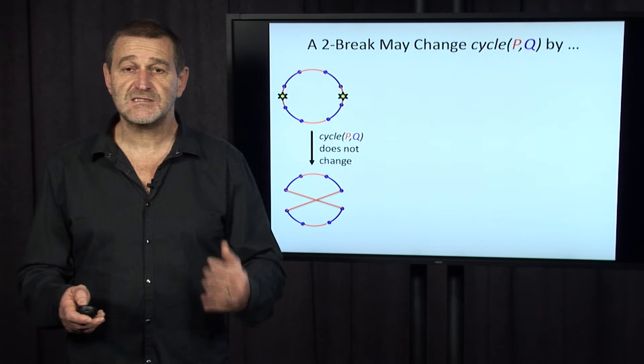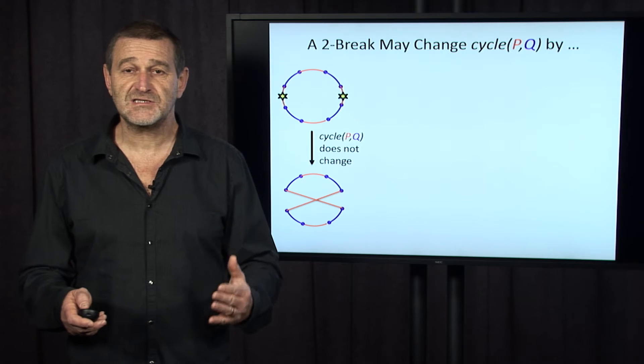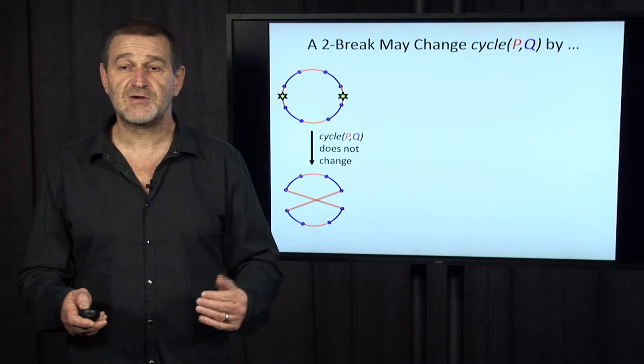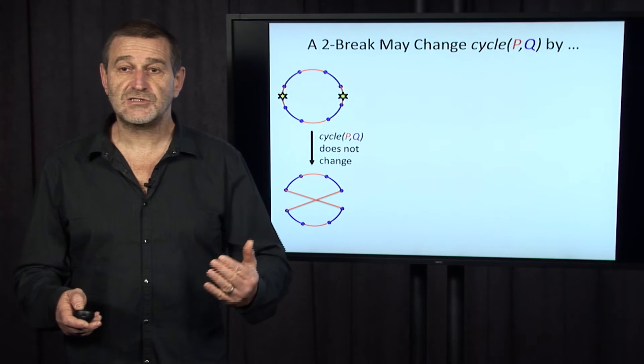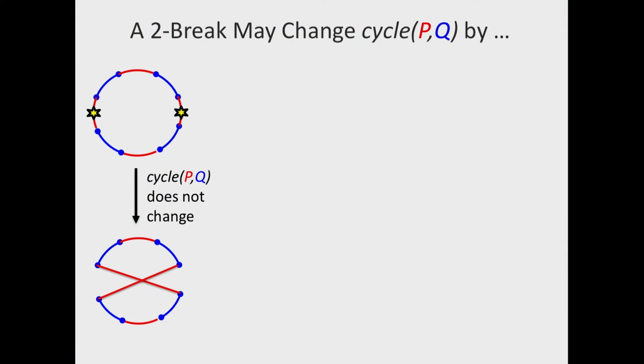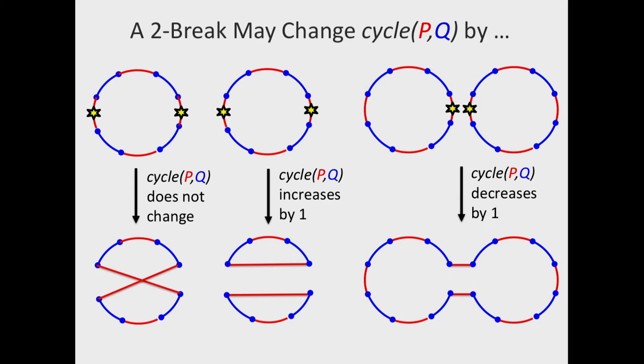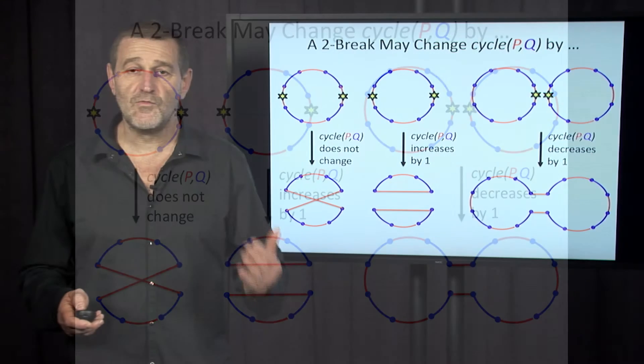Consider first the case when these two red edges belong to the same cycle in the breakpoint graph. In this case shown on this slide, two red edges are removed, substituted by another two red edges, but the cycle number doesn't change. Here's another case where the same two red edges are removed from a single cycle in the breakpoint graph, but the cycle number this time increases by one.